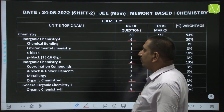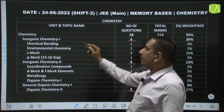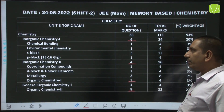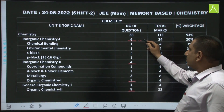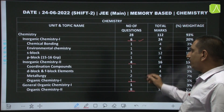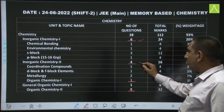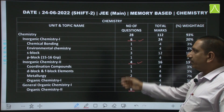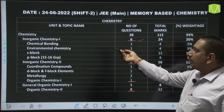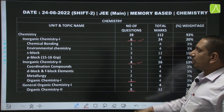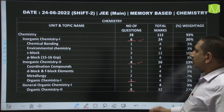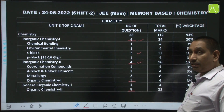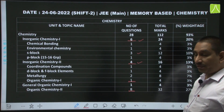In chemistry, in inorganic chemistry part 1 — that means 11th chemistry — we are getting 6 questions. In inorganic chemistry part 2, 4 questions: from chemical bonding, environmental, S-block and P-block. From S-block itself, it is 3 questions today.